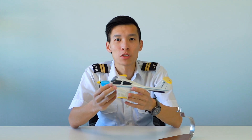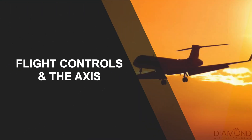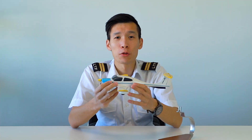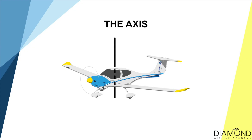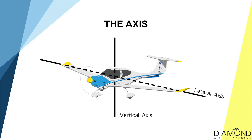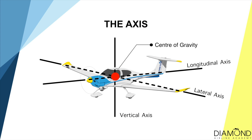After discussing how lift is generated, we'll talk about how the controls work on an aircraft. We'll start by going through the three axes of the aircraft. The first is the vertical axis — it goes from the top vertically down, through the centre of gravity to the bottom. The second is the lateral axis, from one wingtip through the centre of gravity to the other wingtip. The last one is the longitudinal axis, from the nose through the centre of gravity to the rear of the aircraft. As you can see, all three axes intersect at the same point — the centre of gravity.